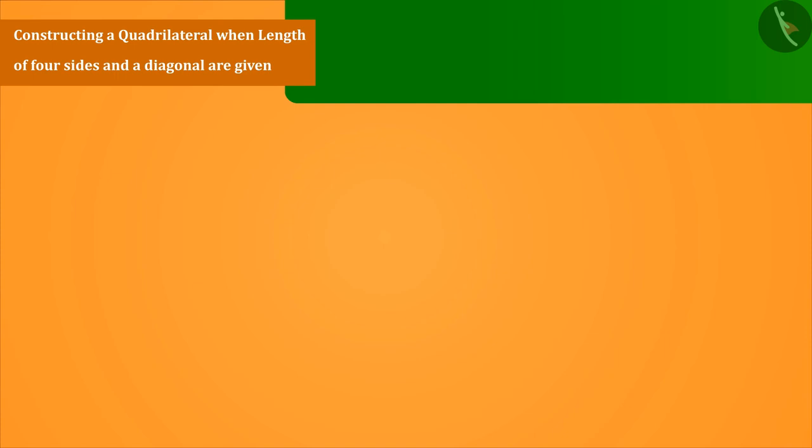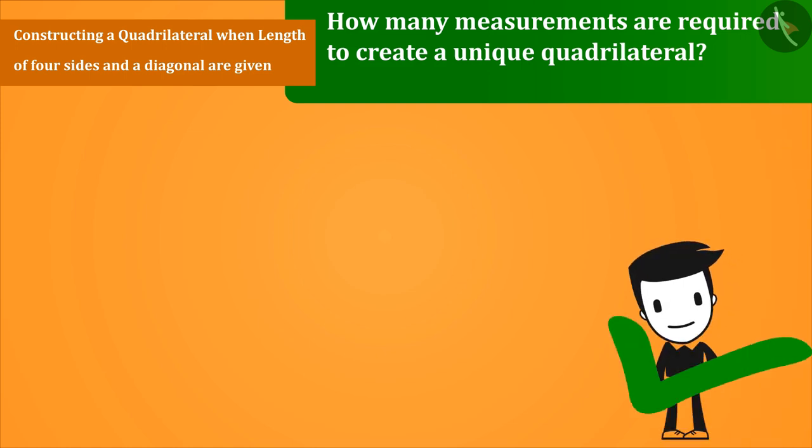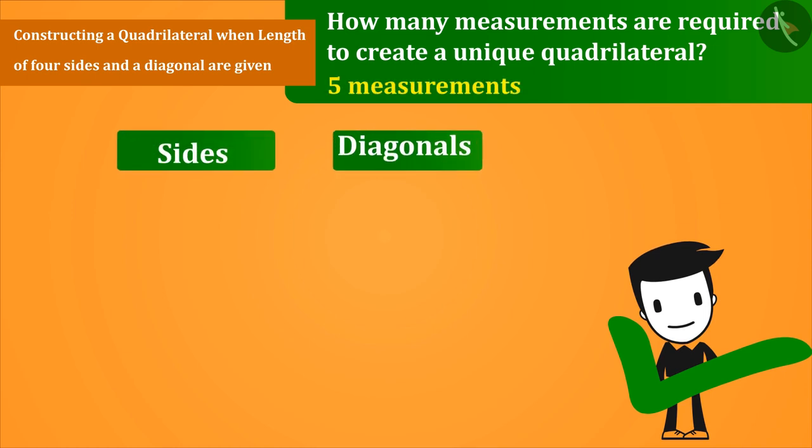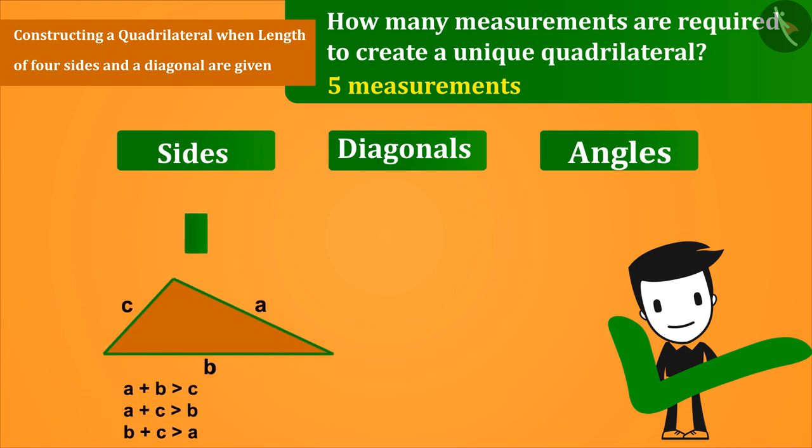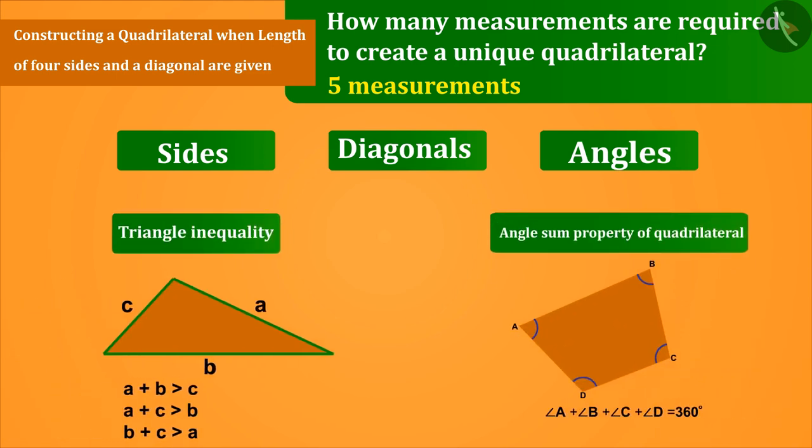Now the question is how many measurements are required to create a unique quadrilateral? Perfectly! Any five measurements are sufficient for a unique quadrilateral. Those are sides, diagonals and angles, triangle inequality and angle sum property of quadrilateral.